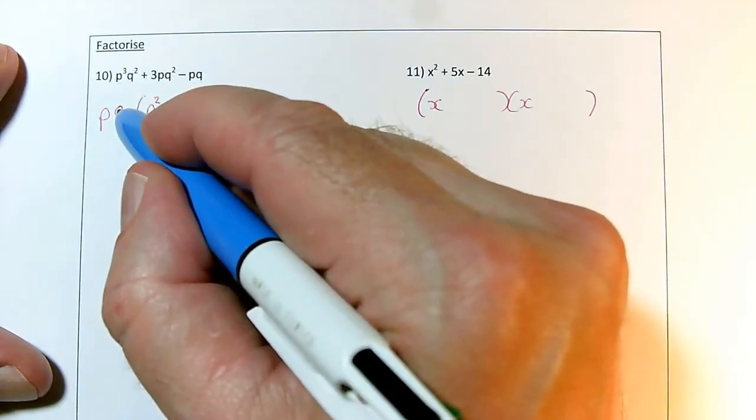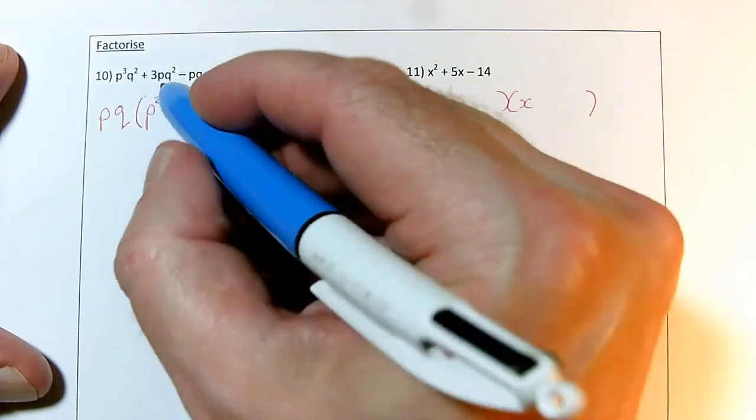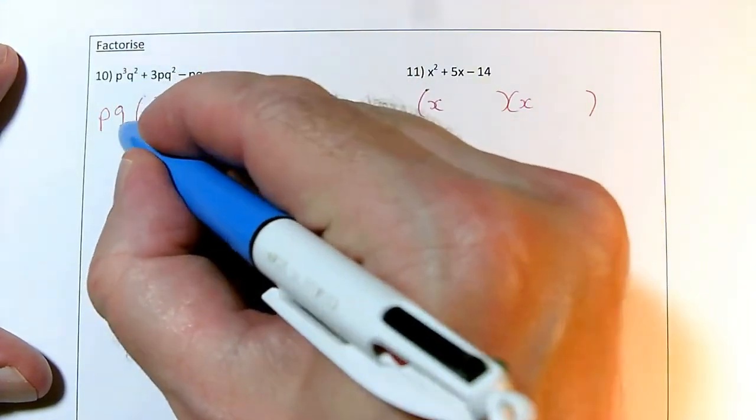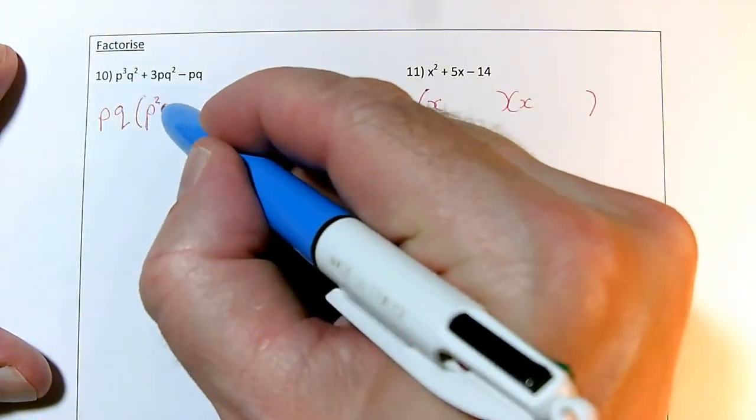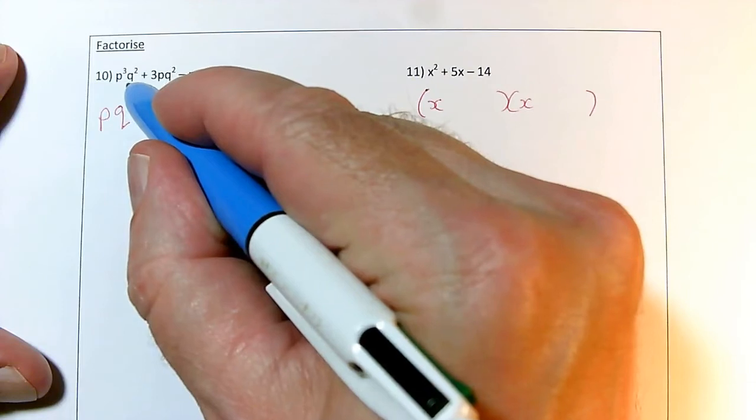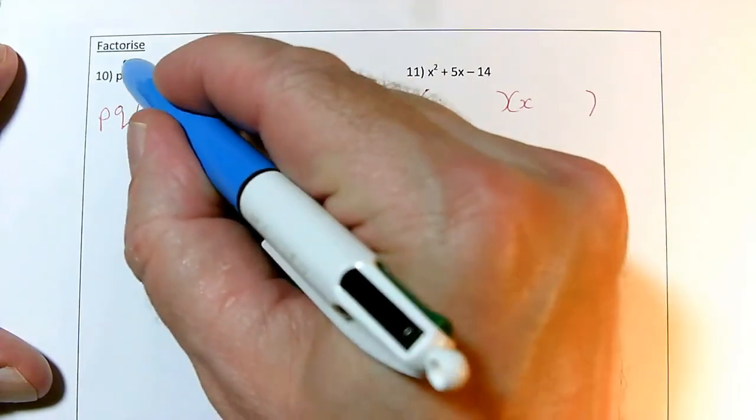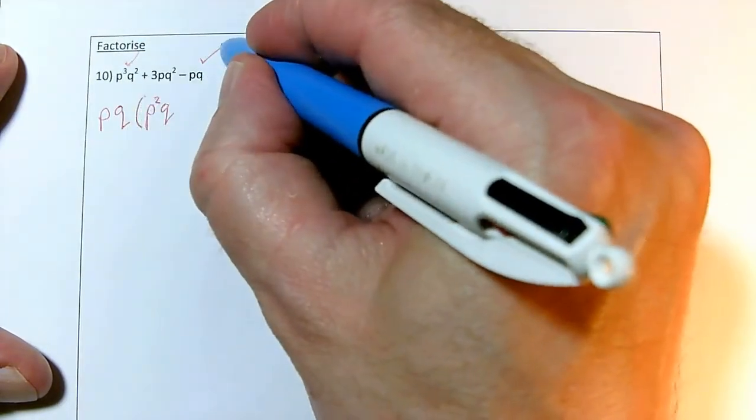Then I've got to make the qs work. I've got a q here. I want q squared, so I need another q here. q times q is q squared. So pq times p squared q does equal p cubed q squared. So I've dealt with that term, and I've already done the minus pq at the end.